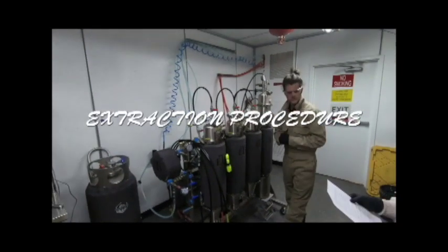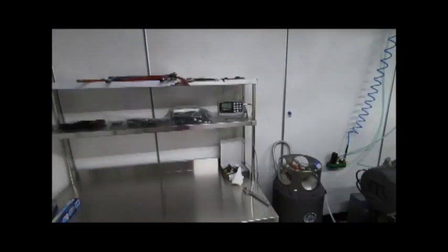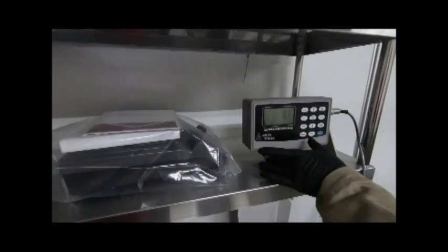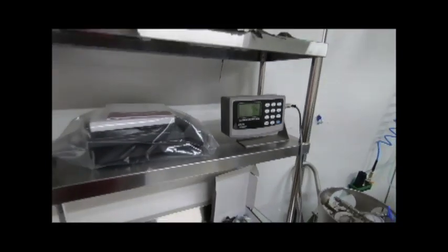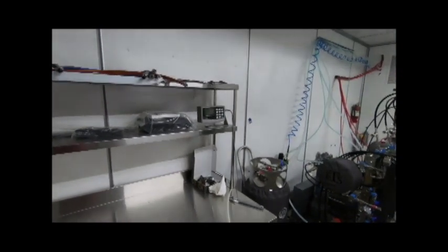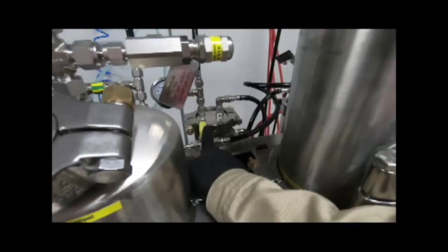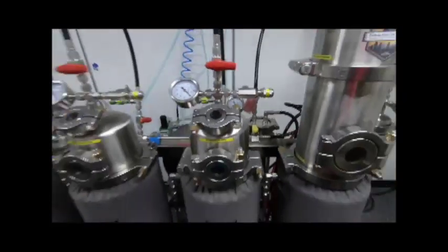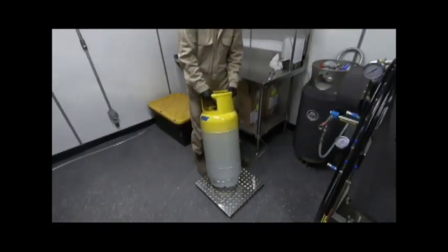Extraction Procedure. Turn on scale. Ensure yellow bypass valve is closed. Place operating tank on scale platform. As you can see.